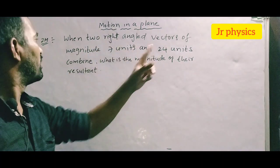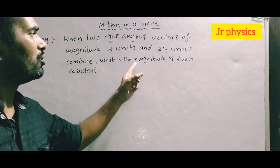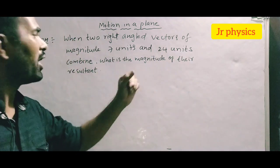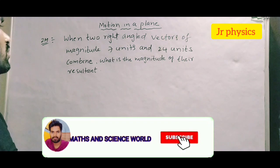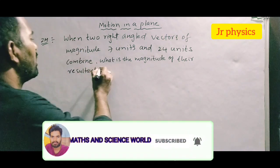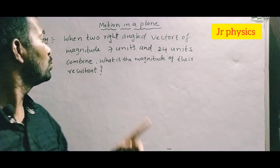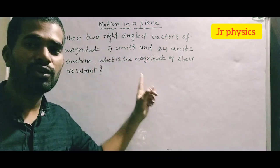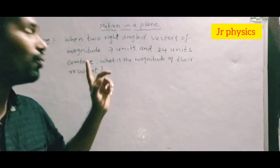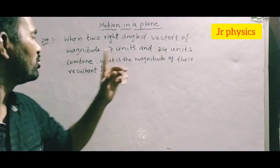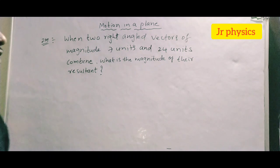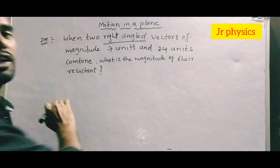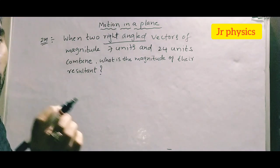When two right-angle vectors of magnitude 7 units and 24 units combine, what is the magnitude of their resultant? Right-angled means theta equals 90 degrees.